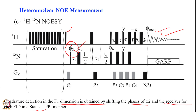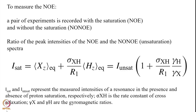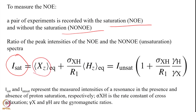To measure the NOE we do a pair of two experiments: one where we are saturating (called NOE saturated) and one where we are not saturating (called NOE unsaturated). The intensity in the saturated case is given by I_sat = X_z magnetization at equilibrium × (σ_XH / R1) × H_z equilibrium. Solving this equation gives I_unsat × (1 + σ_XH / R1 × γ_H / γ_X), where γ_H and γ_X are the gyromagnetic ratios, and I_sat and I_unsat are the intensities of the saturated and unsaturated experiments.